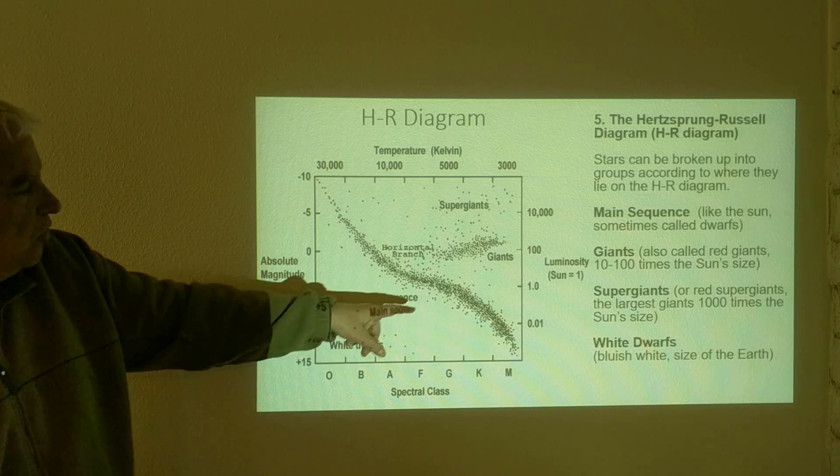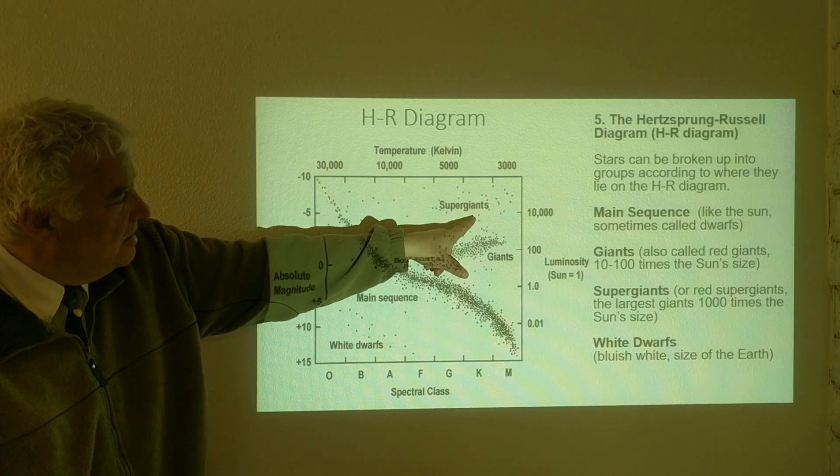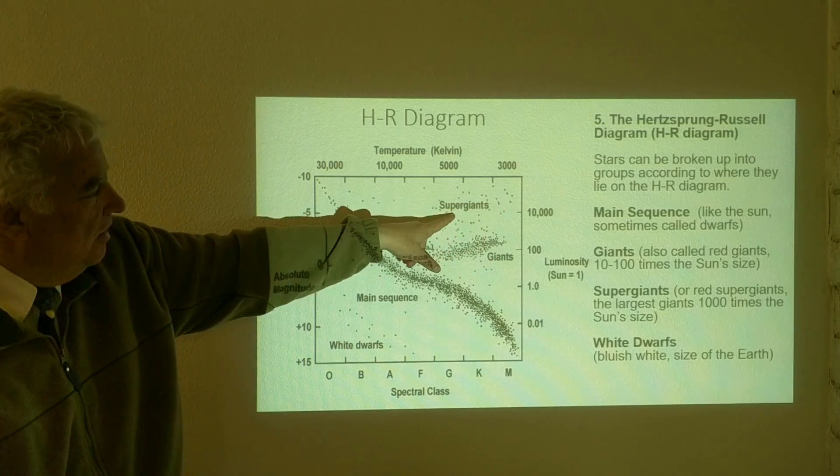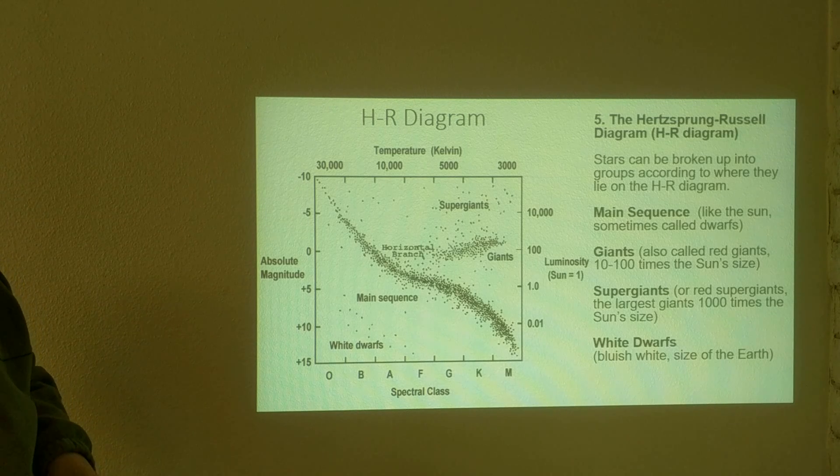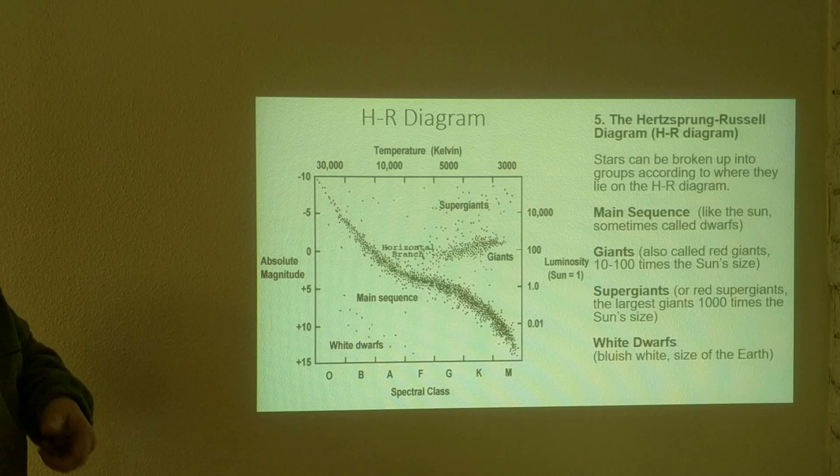So another group of stars are the supergiants. Up here, these are sometimes called red supergiants. The largest giants are a thousand times the size of the sun.